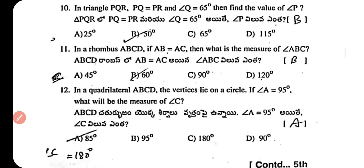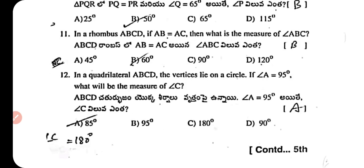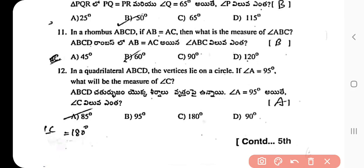Question 11: In rhombus ABCD, if AB = AC, what is the measure of angle ABC? In a rhombus AB = BC. Given AB = AC, triangle ABC is equilateral, so AB = BC = AC. Each angle of an equilateral triangle is 60 degrees, so angle ABC = 60 degrees.